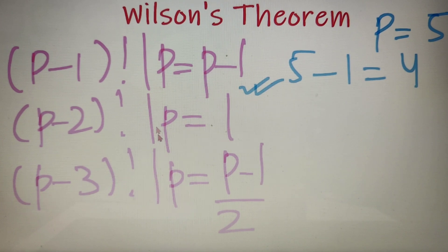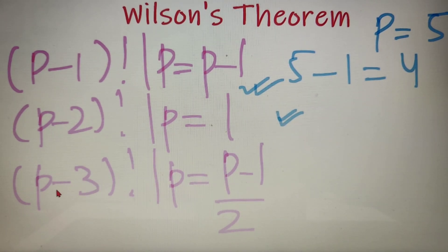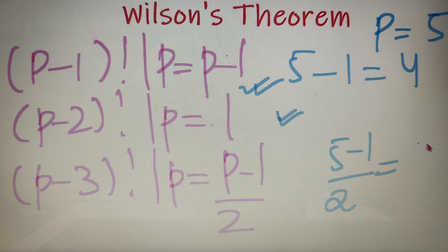For the second case, (5-2) factorial is 3 factorial, which equals 6. When 6 is divided by 5, the remainder is 1, so the second case is verified. For the third case, (5-3) factorial is 2 factorial, which equals 2. When 2 is divided by 5, the remainder is 2 itself. And (p-1)/2 equals (5-1)/2 = 2, so this case is also verified.